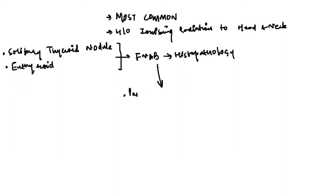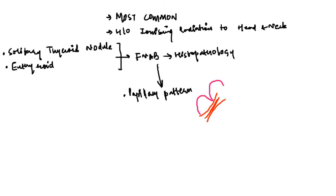In the case of papillary carcinoma, when we do histopathology, the first feature is a papillary pattern. The follicular cells are arranged in a papillary pattern, meaning papillae are formed. There is a fibrovascular core — meaning blood vessels and fibrous tissue are within this core — and the follicular cells are arranged around these papillae.